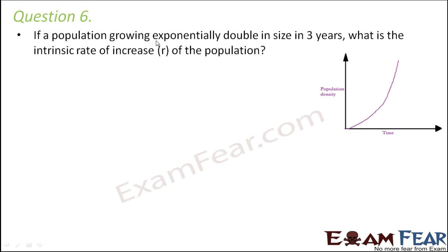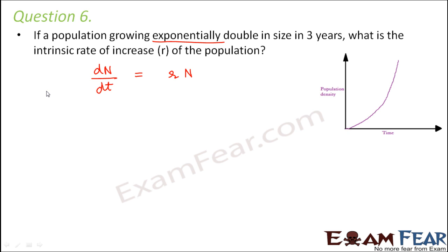When we talk about exponential growth, the relationship is dN/dt = r × N. That is the relationship for an exponentially growing population. In this question, it says that the population has doubled in size in 3 years, so the time period is 3 years.